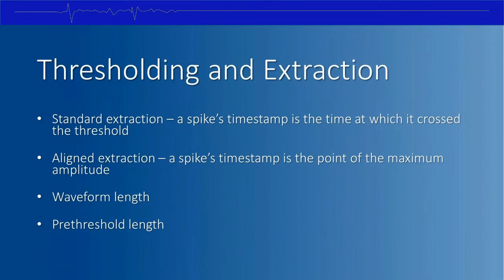The next topic is thresholding and extraction. Waveforms can be extracted from continuous spike data online during acquisition. Thresholding is one way to extract a waveform or spike. There are two methods: standard extraction, where a spike's timestamp is the time it crosses the threshold; and aligned extraction, where the timestamp is the point of maximum amplitude. Along with the extraction point, the waveform length and pre-threshold length determine how much signal is captured around each event.